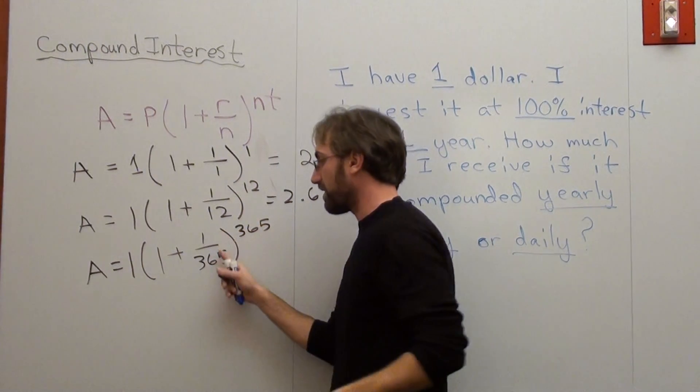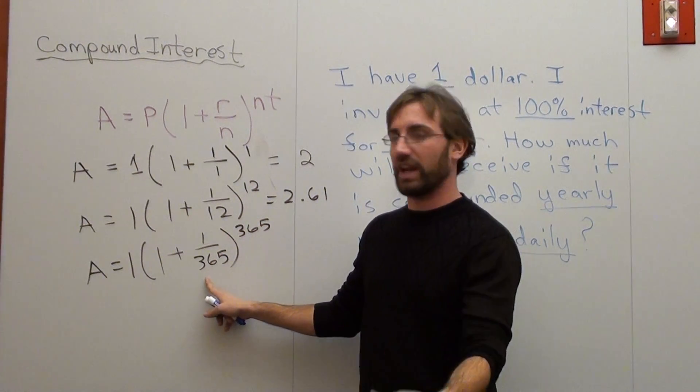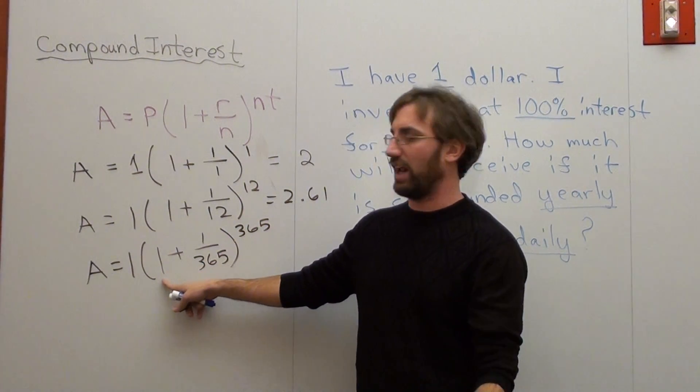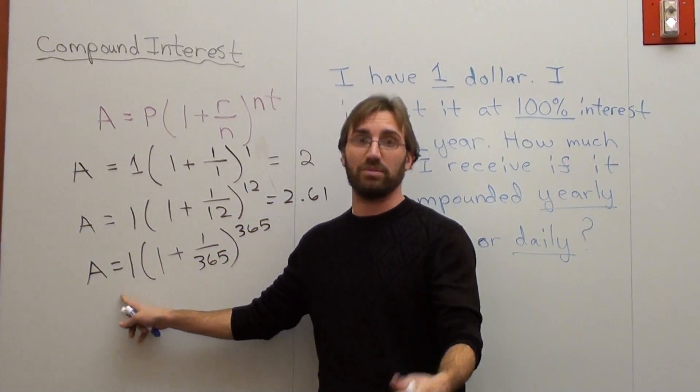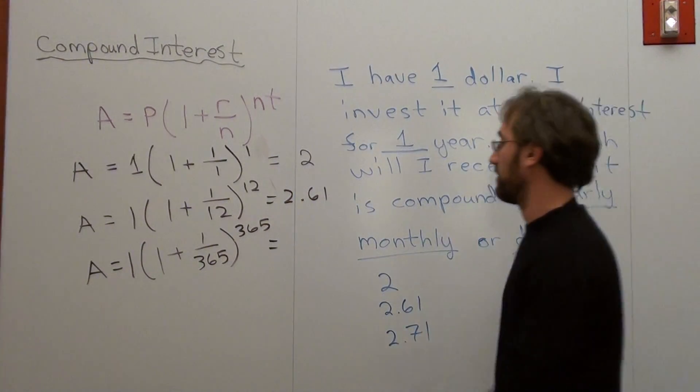I take 1 divided by 365. Figure that out. Then I add 1. Figure that out. Take it to the power of 365. Figure it out. Then multiply it by this number in the front. Which comes out to $2.71.